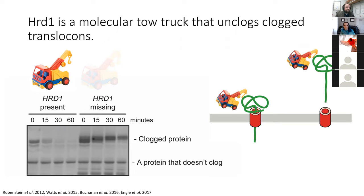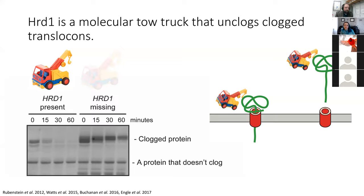HERD1 is a member of a class of enzymes called ubiquitin ligases. While I've pictured it as a simple tow truck, it's actually a component of a much larger complex of proteins that function together to mark and destroy proteins that clog this channel. The translocon is essential for cellular life — if you introduce mutations into the genome that reduce translocon function, cells are very, very sick. Think about what happens if you close down a highway tunnel or even reduce traffic to a single lane at rush hour. Having identified HERD1 as an important molecular tow truck, we hypothesized that cells lacking HERD1 would be as sick as cells that have defects in the translocon.